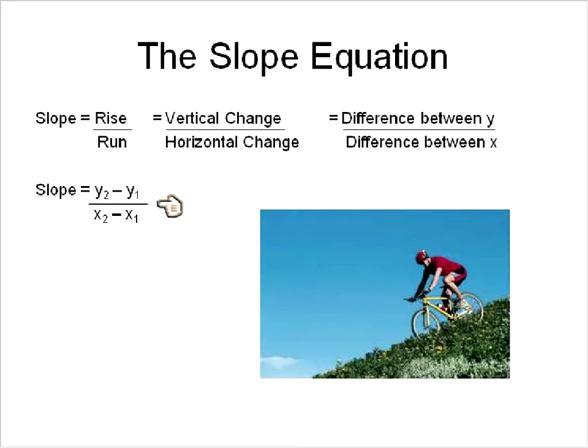And in math terms we write that like this: y2 minus y1 over x2 minus x1. Essentially what that's doing is telling the difference between the y values and the difference between the x values, or the vertical change over the horizontal change. In other words, the rise over the run.